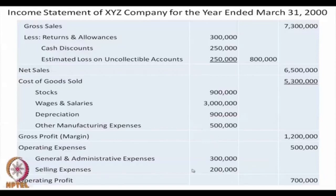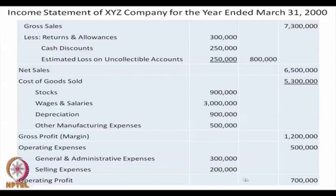Subtracting COGS from net sales gives gross profit, also known as gross margin, of 1,200,000 rupees. From here we subtract expenses incurred outside the factory by the administration and selling departments. General and administrative expenses amount to 300,000 rupees, and selling expenses totaling these operating expenses come to 500,000 rupees.